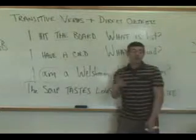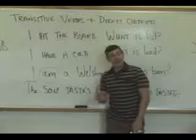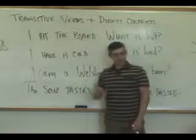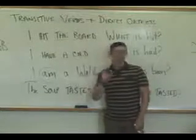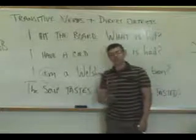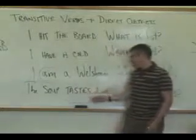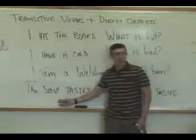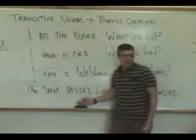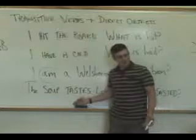Now, if the sentence were different — if it were 'I tasted the soup' — and then you ask, what is tasted? The soup, that's what. There, 'taste' would be a transitive verb with a direct object, the soup. But notice here that in 'the soup tastes lousy,' soup is in fact the subject of 'tastes.' Nothing can be a subject and an object at the same time in the same sentence.